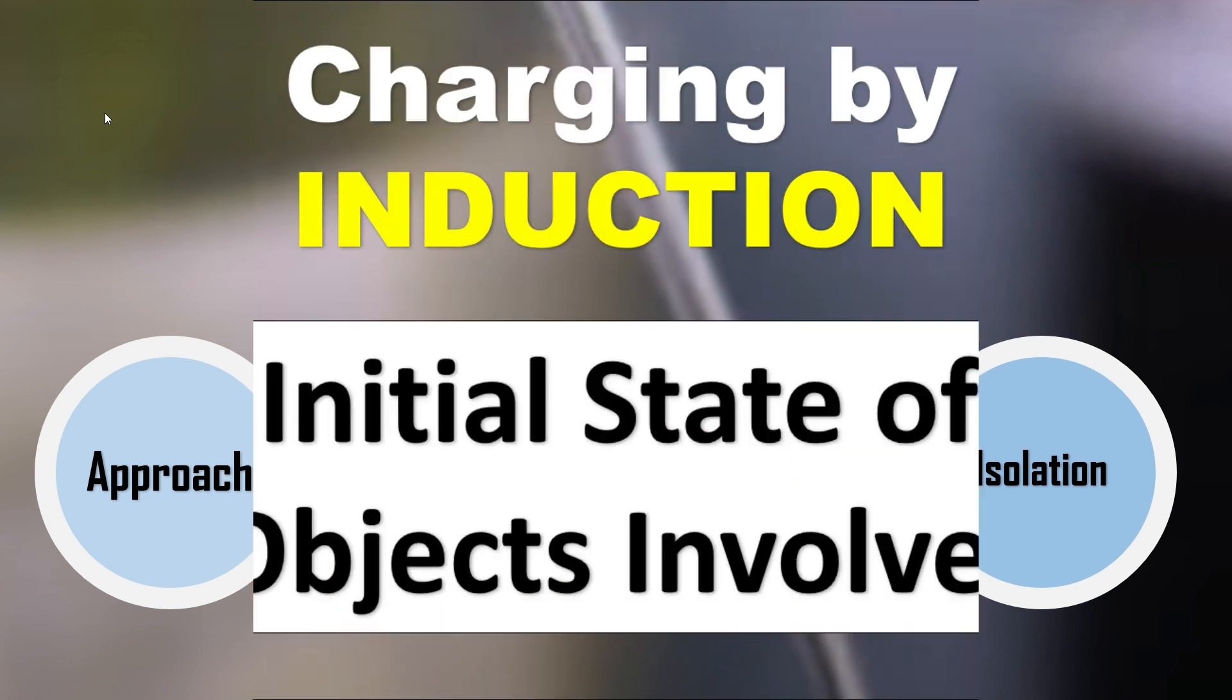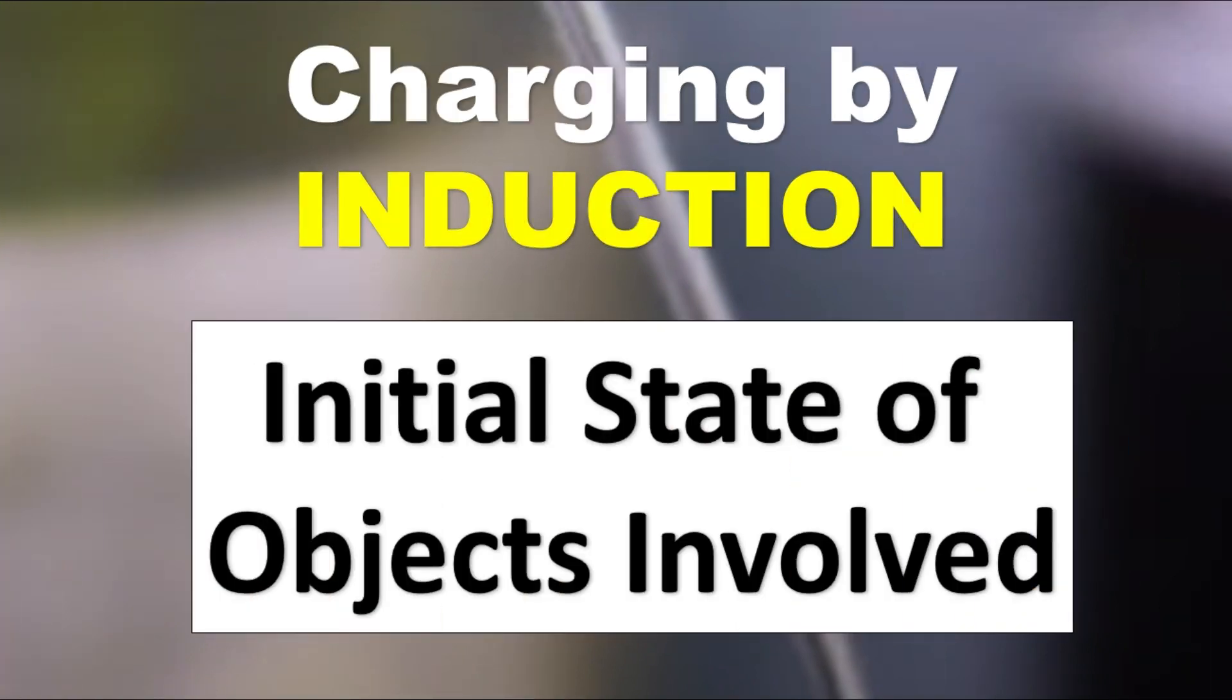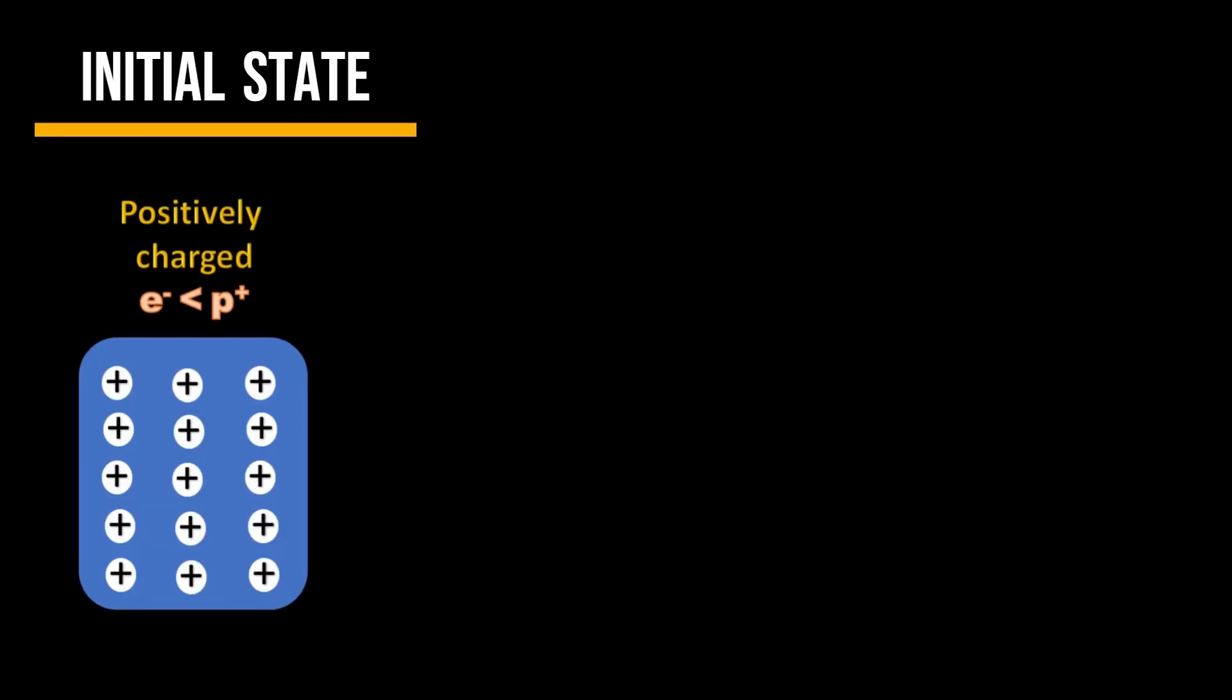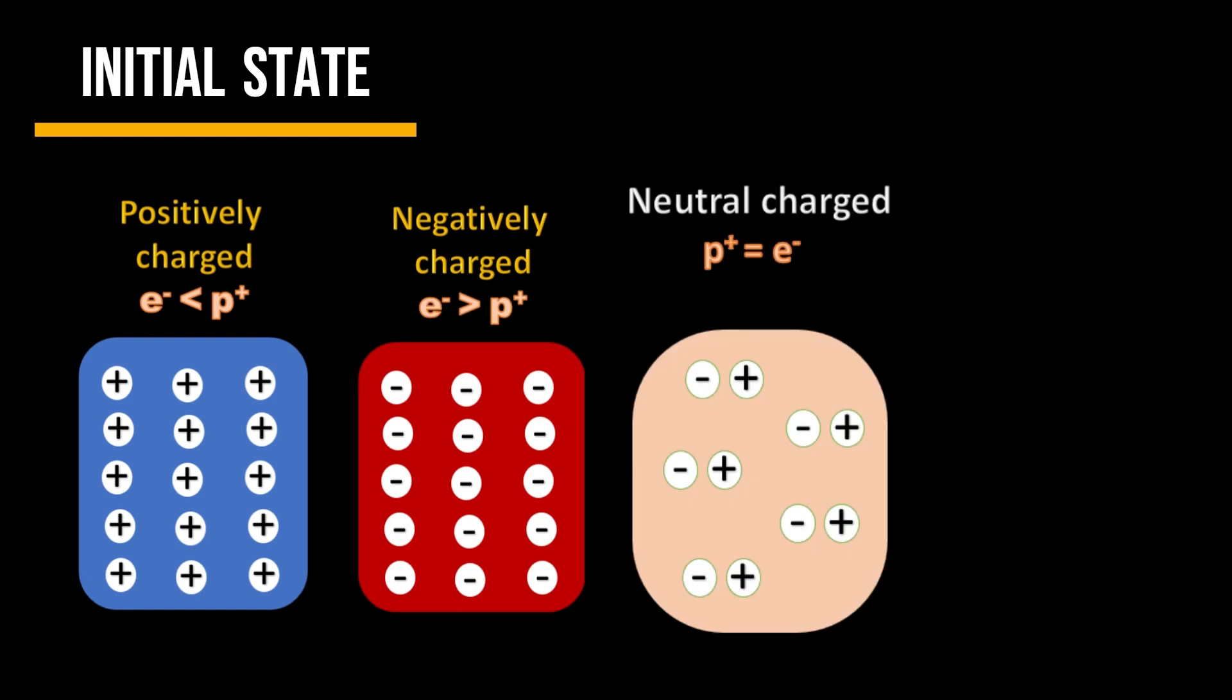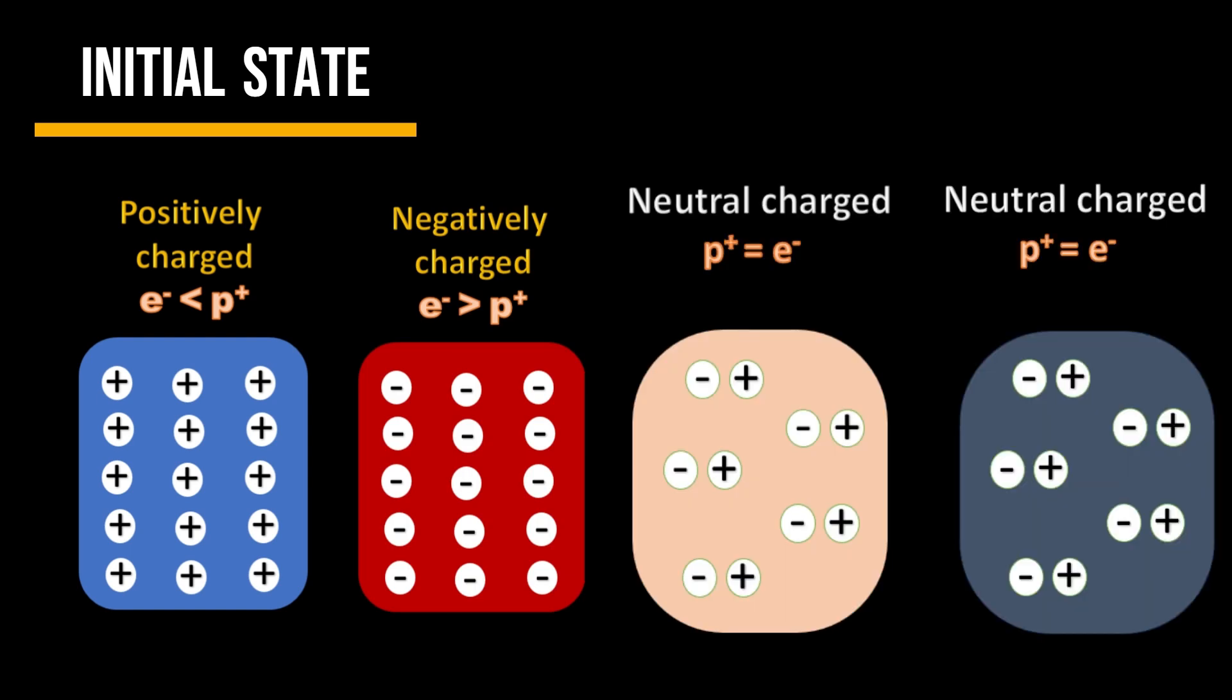Before we discuss the phases of charging by induction, let us first describe the objects involved in the process. A charged object, either positive or negative. A neutral object to be charged. And another object, electrically neutral, will act as a ground.